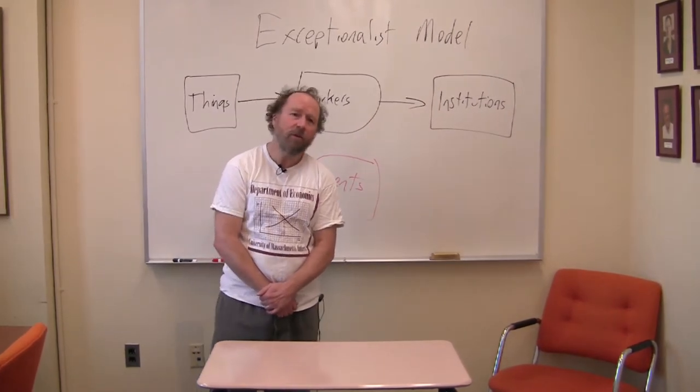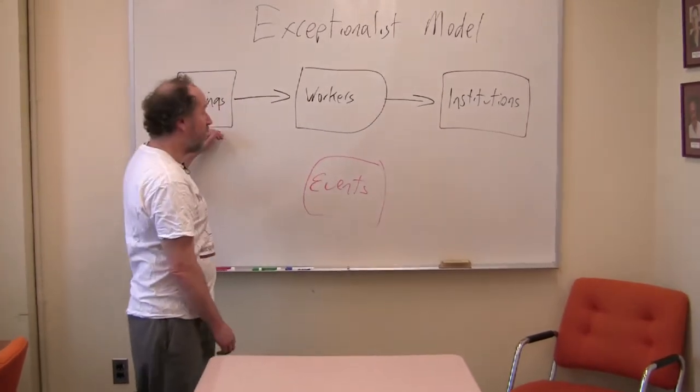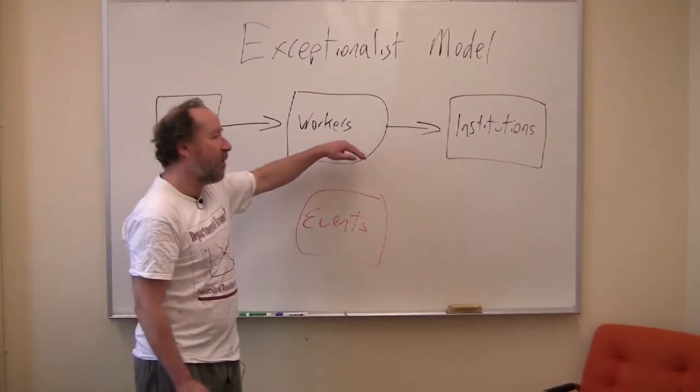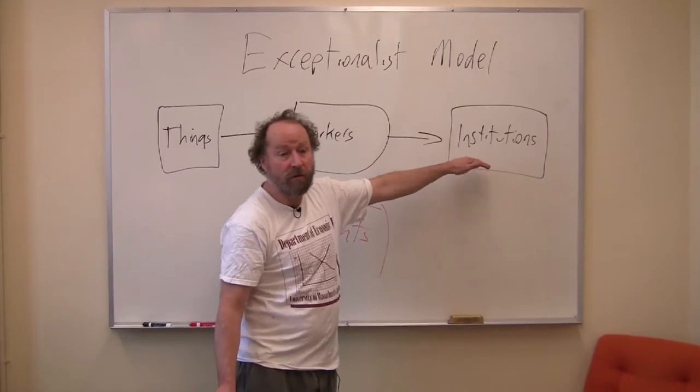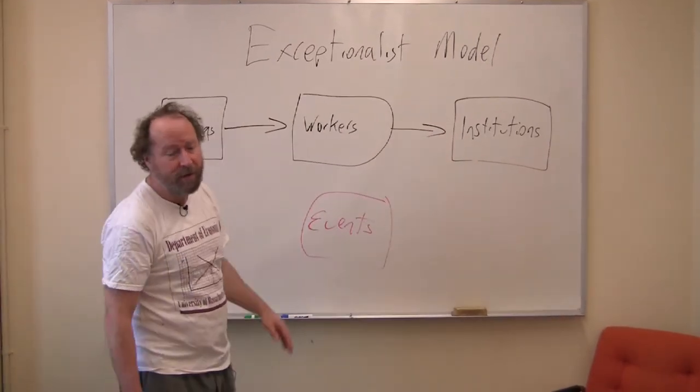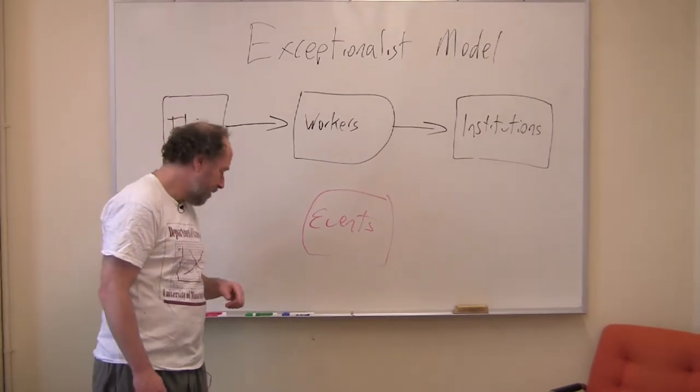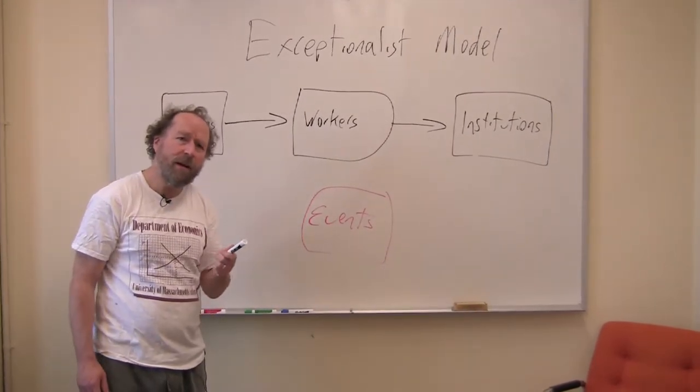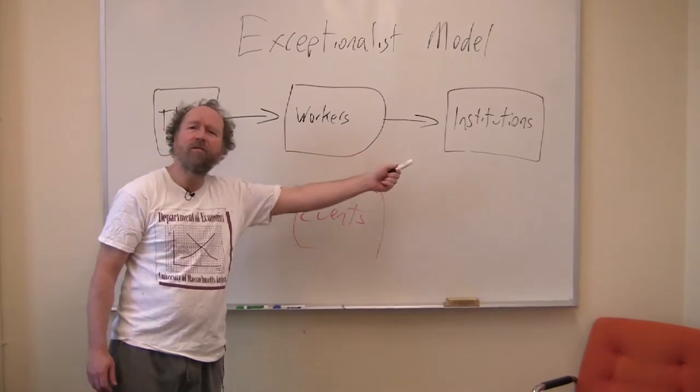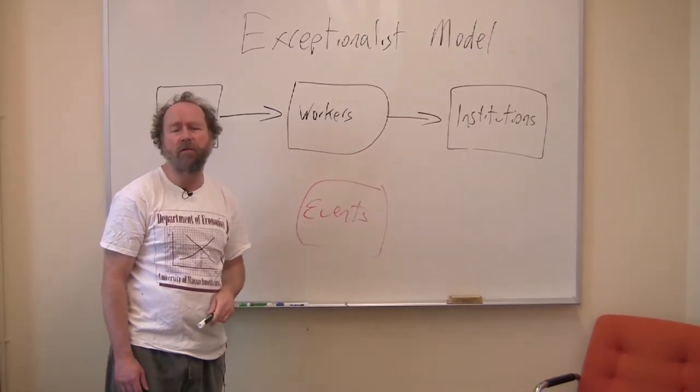Okay, last time we talked about Sombart and his simple-minded model, which is things happen to workers who then create institutions. Now, there are several things wrong with this model. For starters, within this model, Sombart acts as if workers create the institutions of their own choosing.